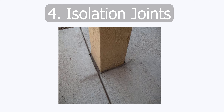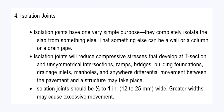Next, isolation joints. Isolation joints have one very simple purpose: they completely isolate the slab from something else — a wall, a column, or a drain pipe. Isolation joints reduce compressive stresses that develop at T-sections and unsymmetrical intersections, ramps, bridges, building foundations, drainage inlets, manholes, and anywhere differential movement between the pavement and a structure may take place.